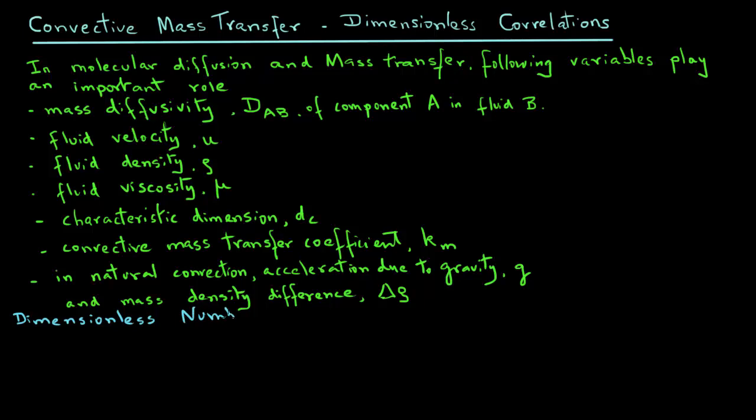One of the dimensionless numbers that is important in mass transfer is a Sherwood number, and we will call it NSh, and that equals the mass transfer coefficient, Km, times the characteristic dimension Dc, divided by DAB, which is the diffusivity.